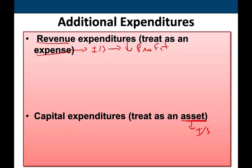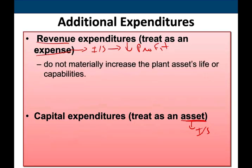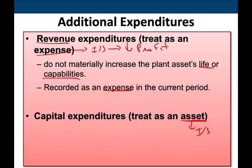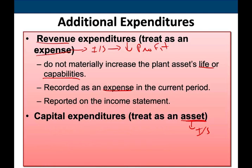What is revenue expenditure? Think of it as an expense. It does not materially increase the plant asset's life or capability. For example, filling your truck with gas doesn't increase your capacity — you just have to use it to maintain its current capacity, otherwise the truck won't drive. Revenue expenditures are recorded as an expense in the current period and reported on the income statement, which reduces your net income.